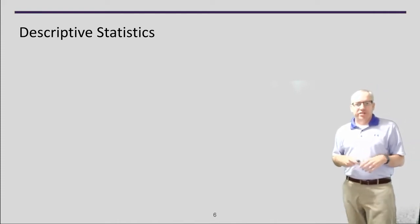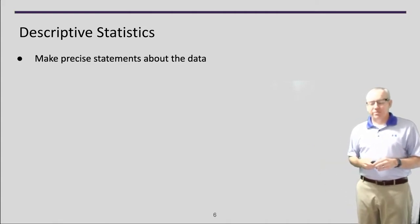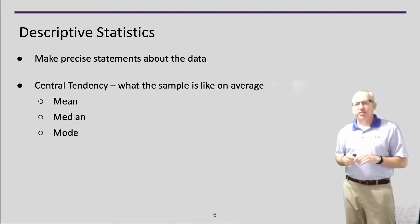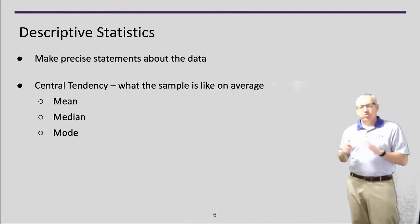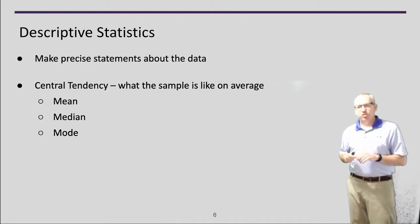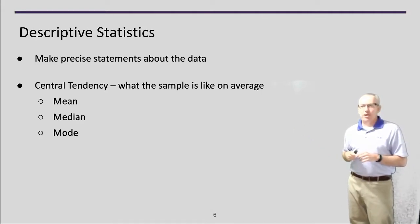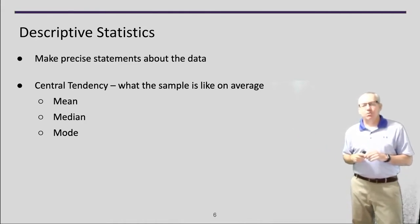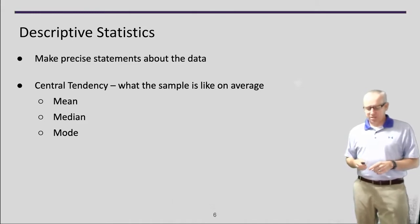Descriptive statistics, as the name says, are descriptive — they allow you to make precise statements about the data. The first kind is central tendency, which in plain language means: what is the sample like on average? There are at least three ways to measure this depending on your variable scale. If you have interval or ratio data, you take the mean — the mathematical average. If you have ordinal data where you don't know the distance between points, use the median. And if you have nominal data with things in different categories, use the mode — just the most common value.